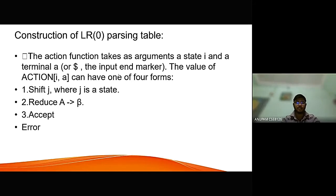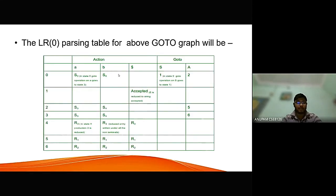The action function takes as argument as state i and a terminal A or dollar, the input end marker. The value of action IA can have one of the four forms: shift J where J is a state, reduce A to beta, accept and error. This is the LR0 parsing table of the given above goto graph.